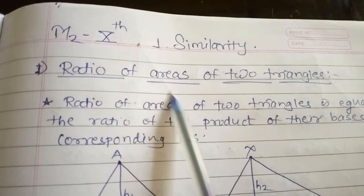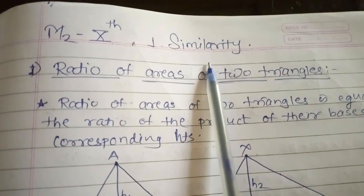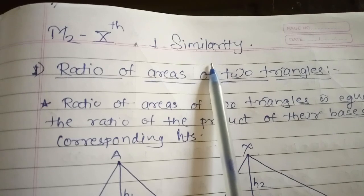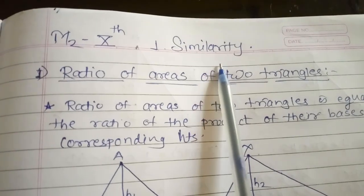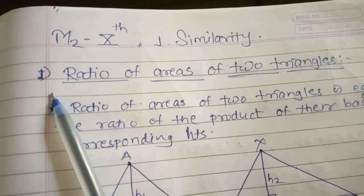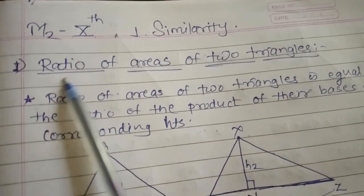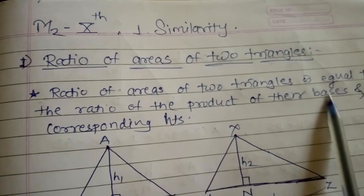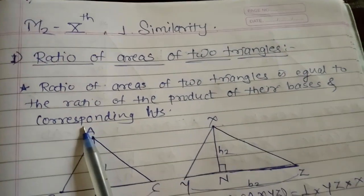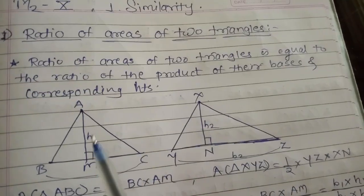Hello students, today I'm going to start the new chapter of M2, that is Similarity of 10th standard. The first concept is the ratio of area of two triangles. See here, there are two triangles.